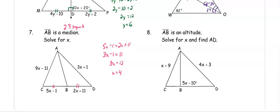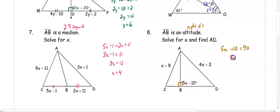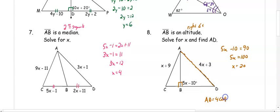In number eight, we have an altitude. An altitude creates right angles. We want to solve for X and find AD. Setting up the right angle: 5X minus 10 equals 90, so 5X equals 100 and X equals 20. To find AD, since AD is 4X plus 3 and X is 20, AD equals 4 times 20 plus 3, which is 83.